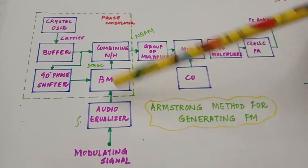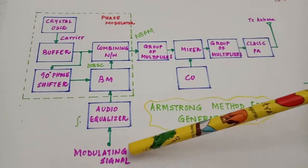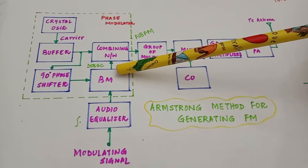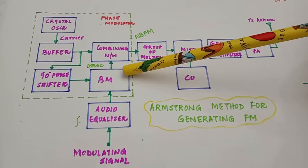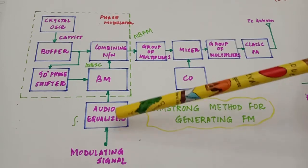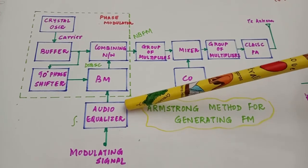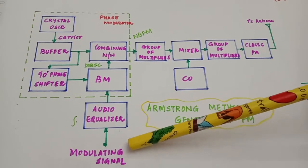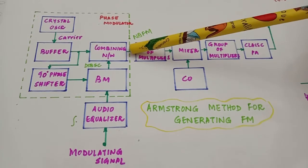Coming back to the block diagram, this portion is responsible for generating a phase modulated output when the modulating signal is the input to the balanced modulator. To generate a frequency modulated output from this phase modulator, you must first integrate the modulating signal using a circuit called an audio equalizer — which is essentially an integrator — and then give it to the balanced modulator. The output obtained is then the frequency modulated output.